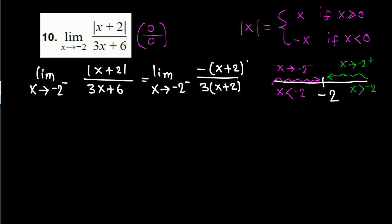Now we cancel x plus 2 from top and bottom and plug in x equals negative 2. The bottom factors as 3 times x plus 2, so after canceling we get negative 1 over 3. There is no x left to plug in, so the left-hand limit is negative one third.